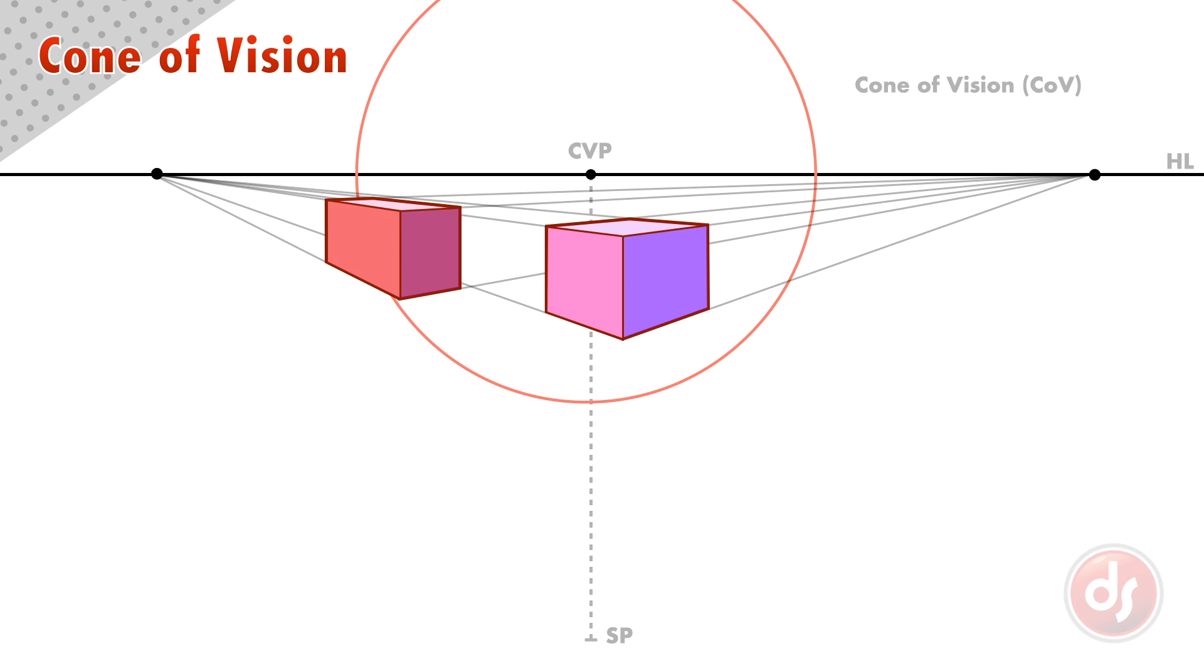Another box sitting farther outside the cone of vision has an extreme amount of convergence and begins to look more distorted.